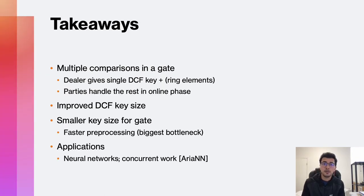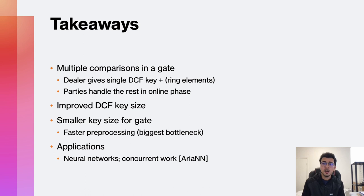In summary: whenever a gate has multiple comparisons, we can ask the dealer for just a single DCF key and some ring elements, with everything else handled by the two parties in the online phase regardless of how many comparisons the gate contains. Combined with our improved DCF key size, this achieves much smaller key sizes for commonly found FSS gates, implying faster pre-processing — which was the biggest bottleneck for the FSS approach. A concurrent work by Arianne also proposes optimizations for FSS geared towards training and inference in neural networks. Thanks for tuning in.